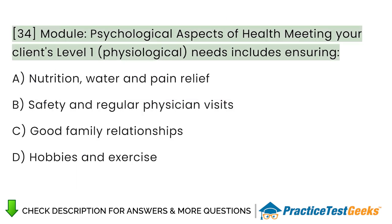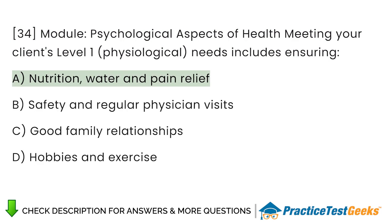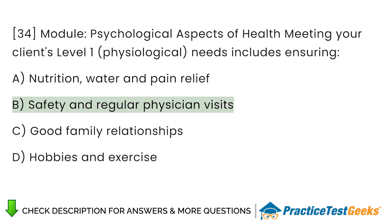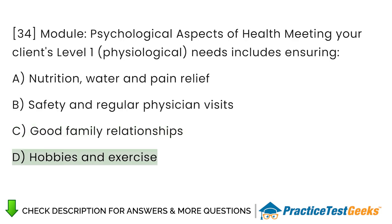Module: Psychological Aspects of Health. Meeting your client's level 1 needs includes ensuring: A. Nutrition, water, and pain relief. B. Safety and regular physician visits. C. Good family relationships. D. Hobbies and exercise.